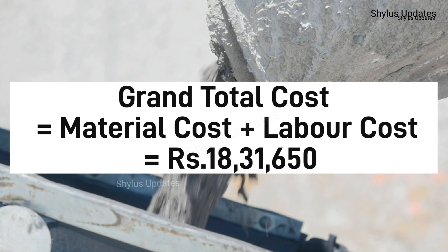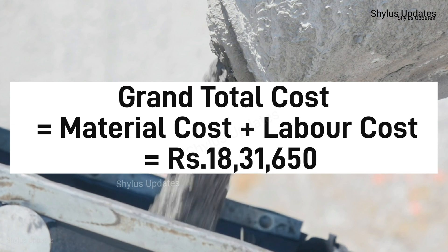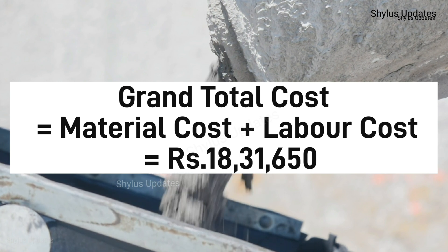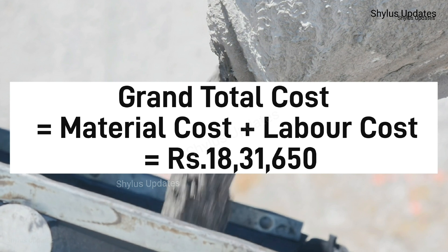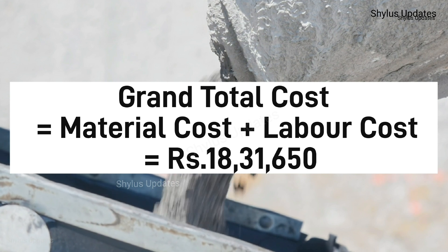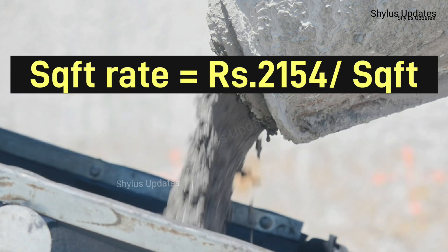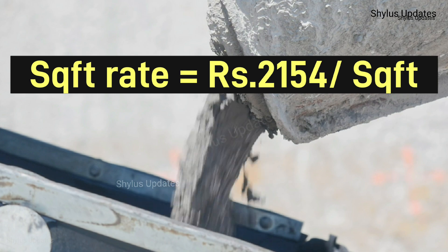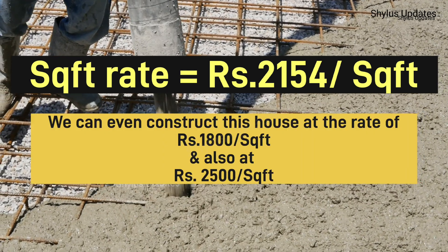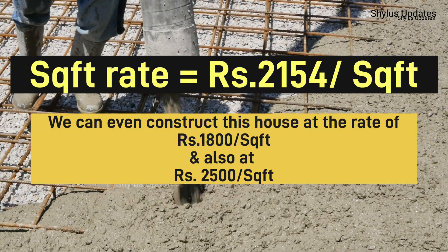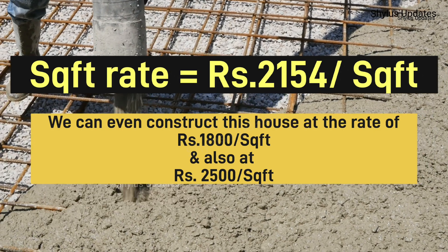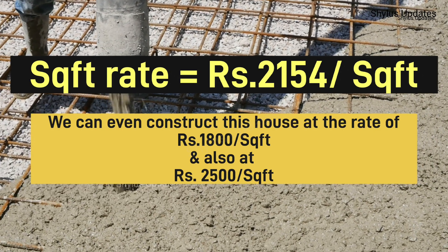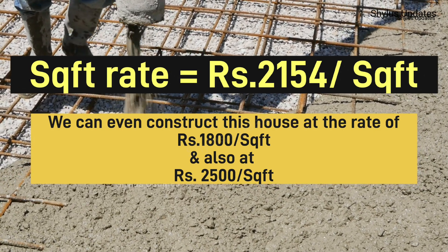When you add material cost and labour cost, you get the grand total cost of Rs. 18,31,650. Sq ft rate is Rs. 2,154 per sq ft. We can even construct this house at the rate of Rs. 1,800 per sq ft and also at Rs. 2,500 per sq ft.